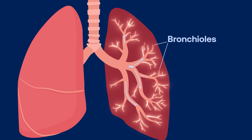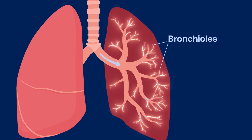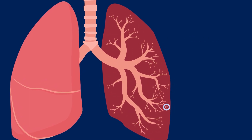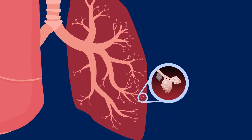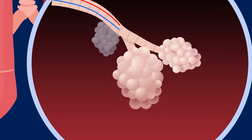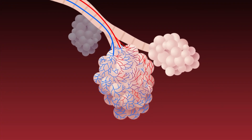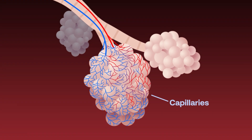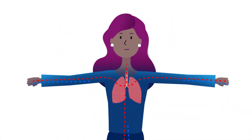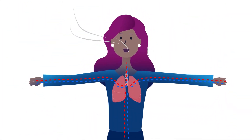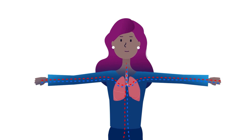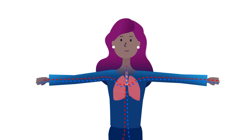Like tree branches, bronchioles divide into thousands of even smaller passages. At the end of each bronchiole is a cluster of little air sacs called alveoli. Alveoli are wrapped in tiny blood vessels called capillaries. The air you breathe in fills these air sacs with oxygen-rich air, and here is where oxygen is transported throughout the body.